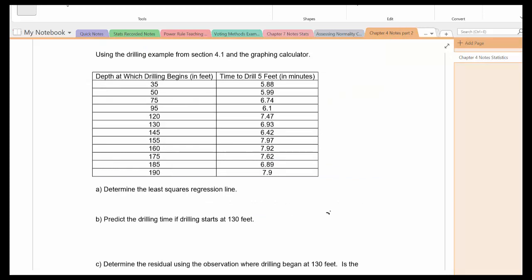Let's take a look at an example. Using the drilling example and the graphing calculator, we're going to come up with the least squares regression line. Keep in mind, we know that the drilling begins, that's the explanatory, that'll be L1. And the time to drill, that's the response variable, that'll be L2. So let me put these data values into the calculator now.